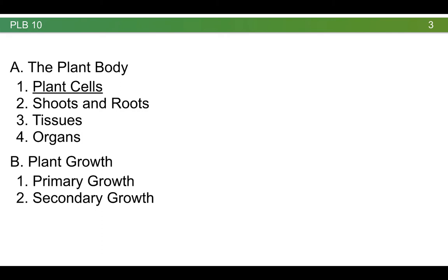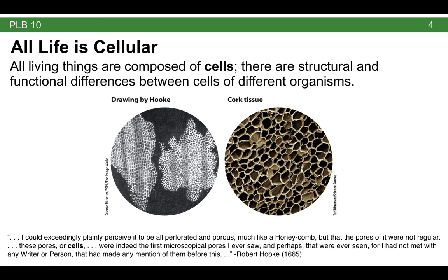So let's start with plant cells. The first thing to recall is that all life is cellular — all living things are composed of cells, despite the fact that there are structural and functional differences between cells of different organisms. One interesting thing to note is that the discovery of life being composed of cells was made by Robert Hooke in 1665 while looking at cork tissue. Microscopically, the plant seemed to be composed of a bunch of little separate pockets which he called cells. If you look at the drawing by Hooke and compare it to a modern photograph, you can have a good idea of what he was actually seeing.